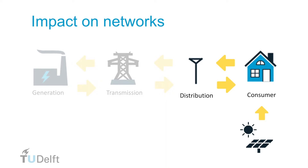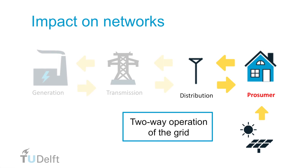At the same time, consumers are starting to generate electricity themselves, mostly through rooftop solar. One effect of the energy transition is that there will be more local renewable generation. Consumers that generate electricity are also called prosumers. For prosumer buildings, two-way operation of the electricity network is needed. This will allow power to be injected into the grid during the day when the sun produces electricity, and withdrawal of power from the grid at night. As the grid has previously been designed for one-way power flows, this must be considered in the future.